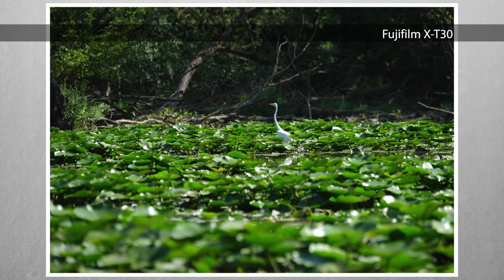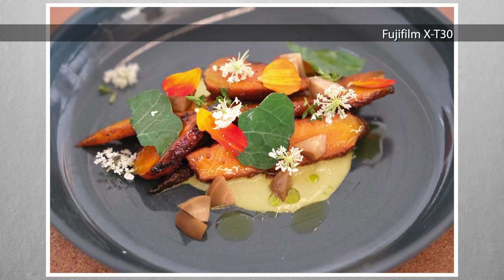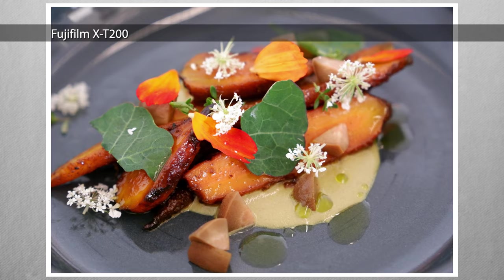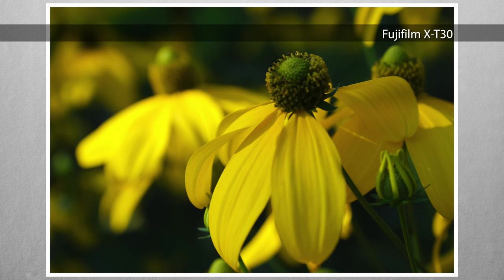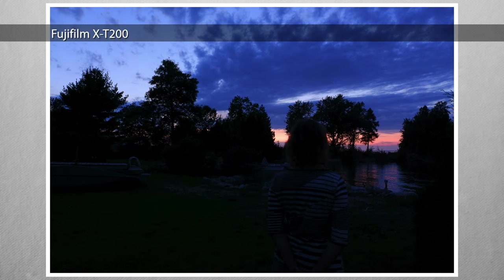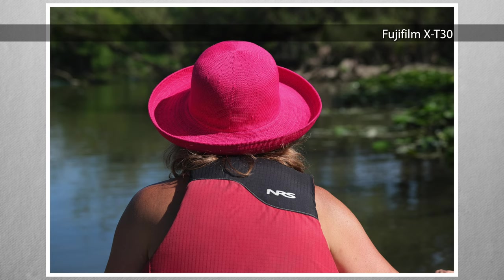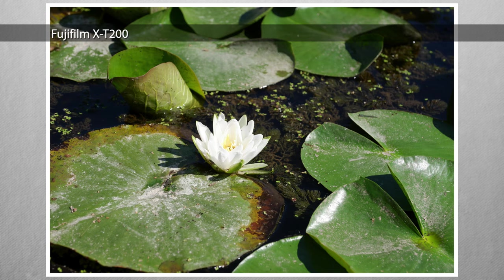The X-Trans sensor should give the X-T30 the edge in color purity and dynamic range, but honestly it's hard to tell the difference in images taken using similar settings where the primary difference is the sensor. Only occasionally do you observe a noticeable difference, like the clouds in this sunset, where the X-T200 made them blue while the X-T30 rendered a more realistic gray tone. For a closer look, I've posted these on Flickr where you can see all of the EXIF data.